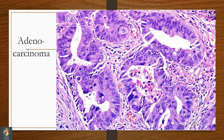This slide is showing another glandular tissue with hyperchromatic nuclei all over the epithelium. The epithelium is anaplastic here. Anaplastic glandular epithelium with hyperchromatic nuclei is a hallmark for adenocarcinoma.